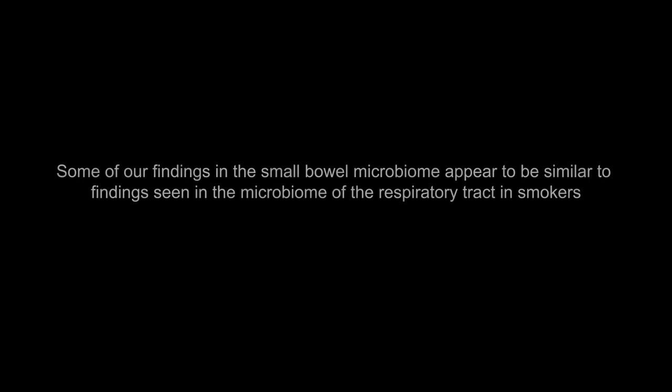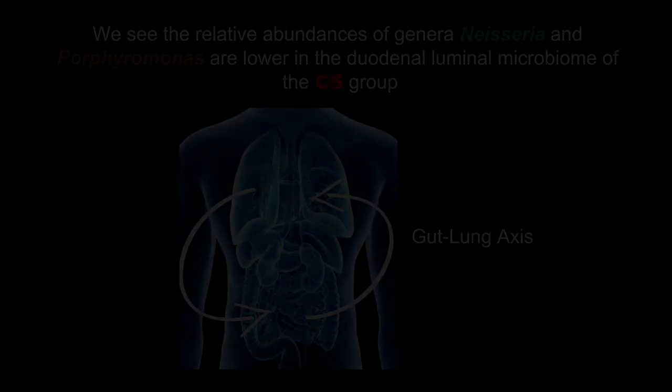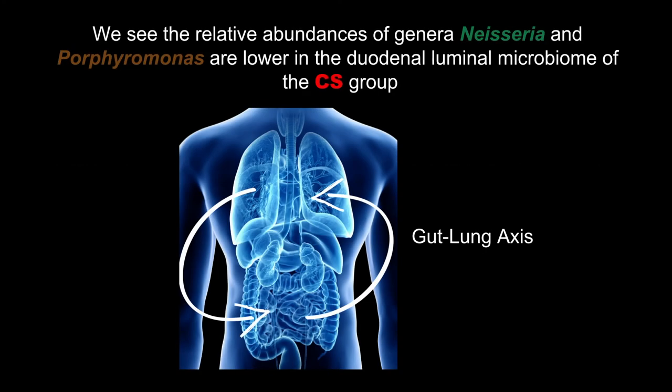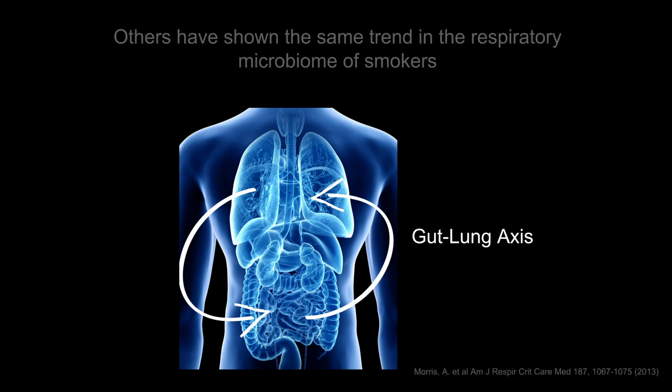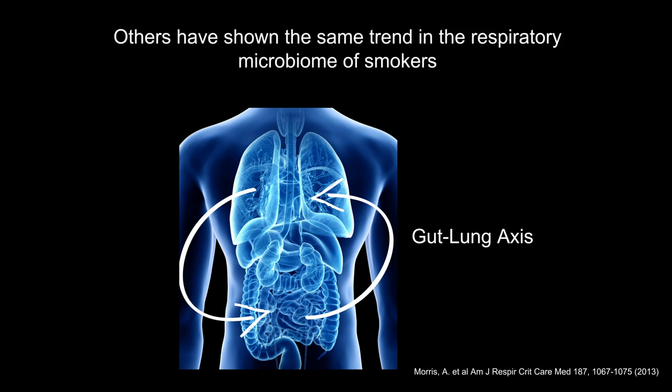Some of our findings in the small bowel microbiome appear to be similar to the findings seen in the microbiome of the respiratory tract in smokers. We see that the relative abundances of genera Neisseria and Porphyromonas are lower in the duodenal luminal microbiome of the CS group, and others have shown the same trend in the respiratory microbiome of smokers.